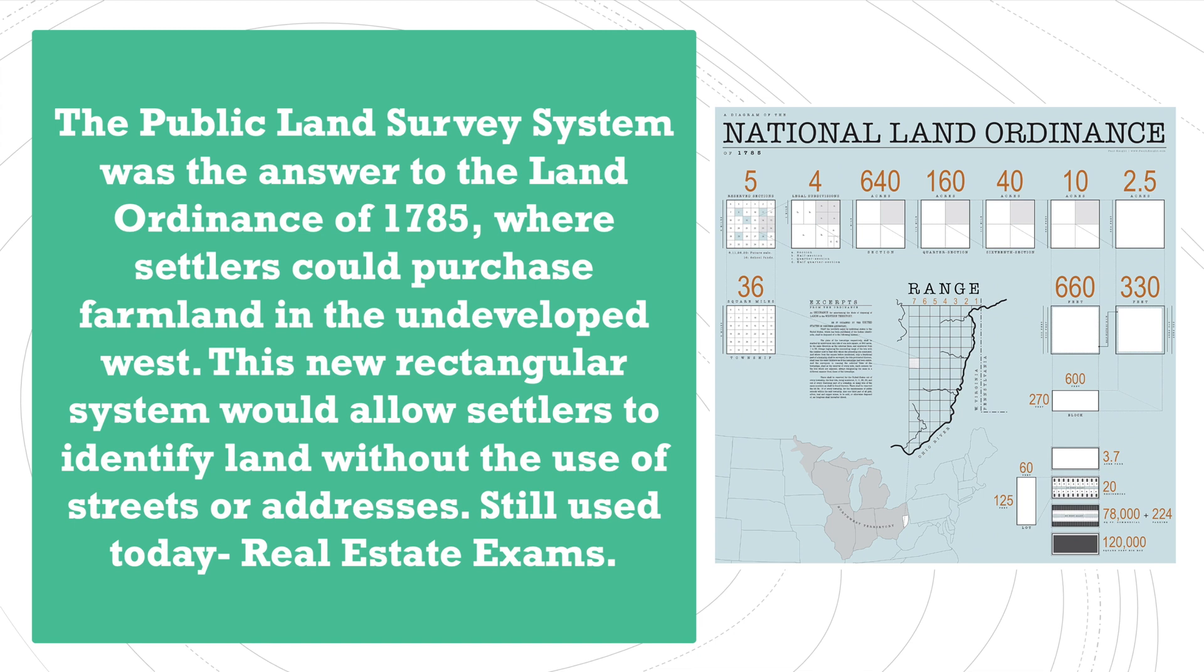To begin, the public land survey system was the answer to the Land Ordinance Act of 1785. Luckily for us, Thomas Jefferson got involved and he designed a system where settlers could purchase farmland in the undeveloped West. This new rectangular system would allow settlers to identify land without the use of streets or addresses, and in fact it's still used today. It's actually part of the real estate exam in most states.